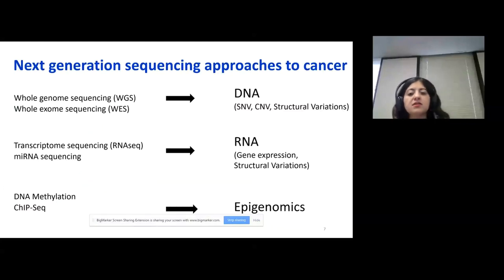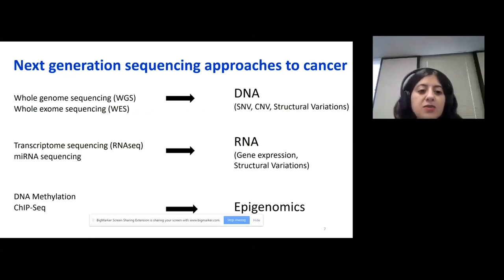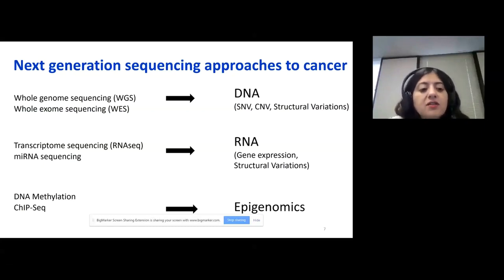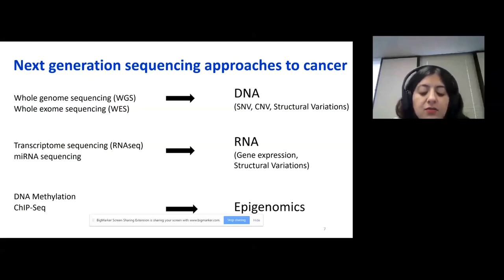Thanks to next generation sequencing, we can understand the transcriptomic, genomic, and epigenomic landscape of the tumor using whole genome sequencing or whole exome sequencing. We can get insight about single nucleotide variations, copy number variations, or structural variations. Using RNA sequencing, we can get insight about gene expression. Using DNA methylation or ChIP sequencing, we can get insight into epigenomics. But this data is really complex and we need integrative analysis to really understand it.